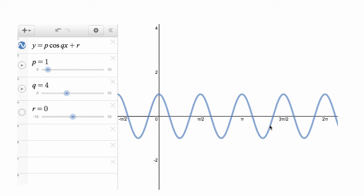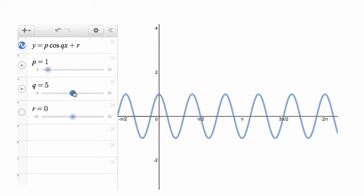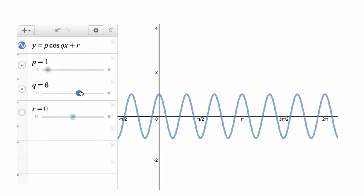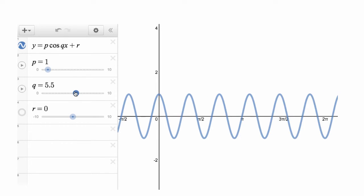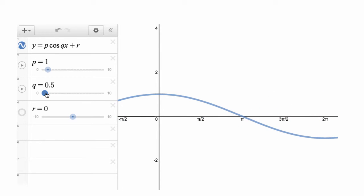We've got 1, 2, 3, 4. That number Q counts the number of cycles that we have in a normal 0 to 2 pi range. So 4 cycles, 5 cycles, Q is 6, we have 6 cycles. If Q is a half, we've got half of a cycle. So the number Q multiplying the angle tells us the number of cycles in a range 0 to 2 pi.